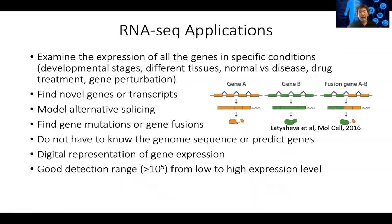RNA-seq has many, many applications — it's very versatile. The very basic application is examining the expression of all genes in a specific condition. This could be a developmental stage, comparing different tissues or organs, comparing normal physiological status versus disease stage. Also, cells, tissues, organs, or animals could be under drug treatments or gene perturbation — you knock out a gene or overexpress a gene — and you want to look at the differentially expressed genes in different conditions.